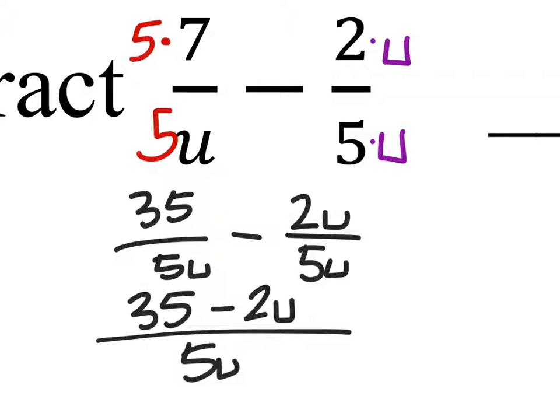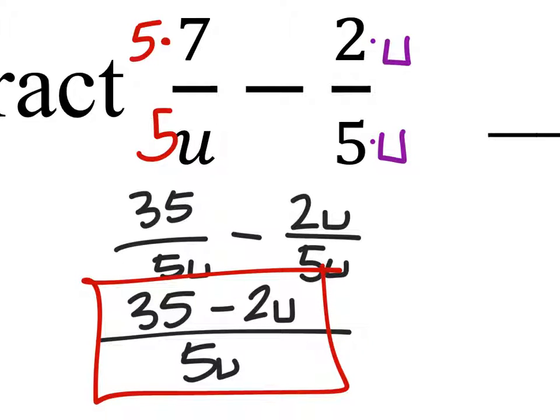This one is going to come out as an expression. Not really a value. And that's okay. It wouldn't be 33U over 5. It would not.